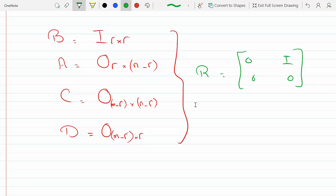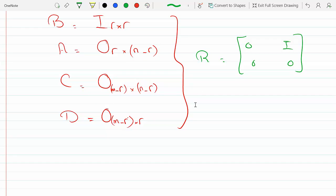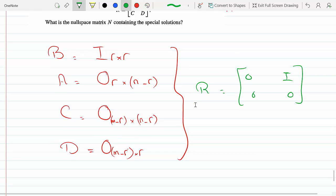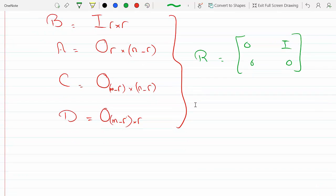And what's the null space? The null space is the set of vectors that gives a special solution for A times x equals zero, the matrix times x equals zero.